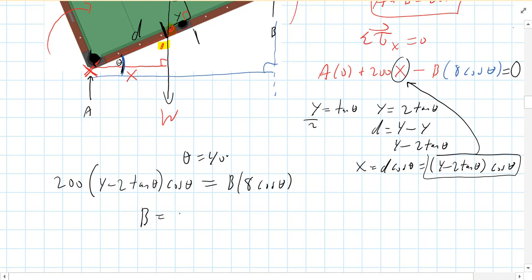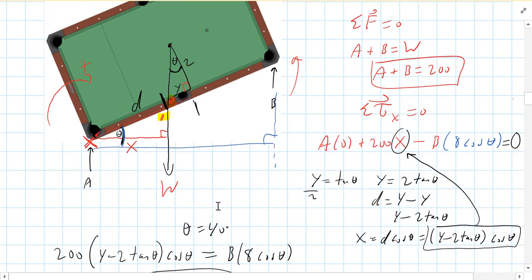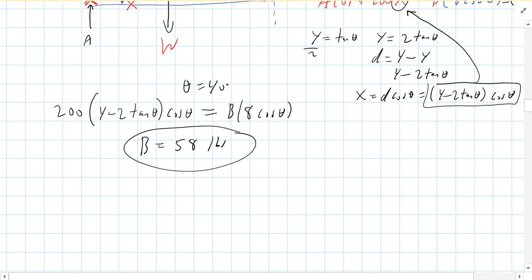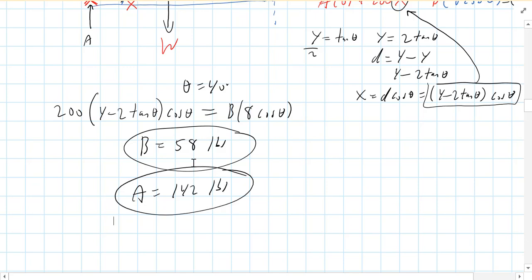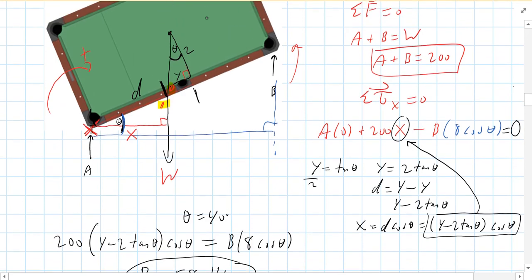And again, theta is equal to 40 degrees. So if you plug all that in and you solve for B, you should get a force of 58 pounds. So the person on the right only has to carry 58 of the 200 pounds. That means A has to carry 142 pounds. So A is definitely getting a short end of the deal, right? They're definitely carrying more of the weight of the pool table.